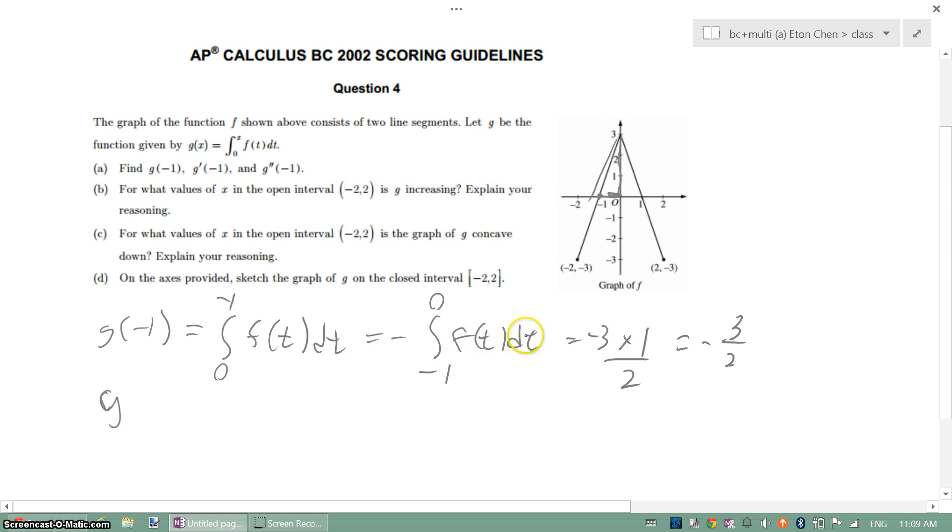And then we move on, derivative of g. When we take the derivative of both sides, it will just equal to f(t), which is pretty easy. So when it's negative 1, f equals 0, so it's 0.